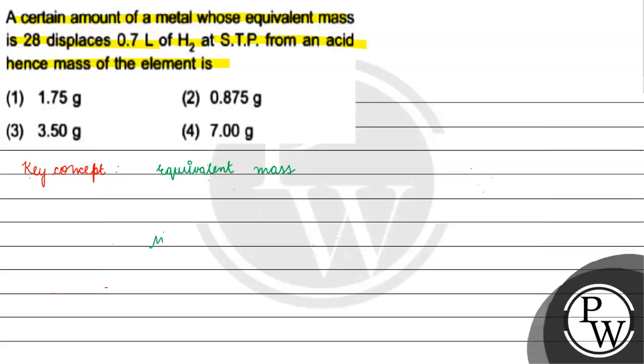What have we said? The reaction with metal and acid. Metal reacts with acid HX to form salt and hydrogen gas. This is mentioned in the question - hydrogen gas released at STP.